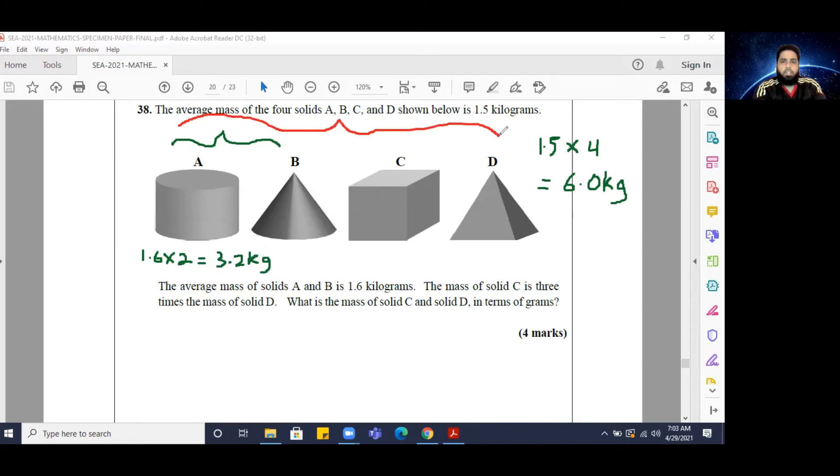So the combined mass of all four solids is 6.0 kilograms, whereas the combined mass of solids A and B is 3.2 kilograms, and we want to know what the mass of solid C and solid D is in terms of grams. So what we're going to do now is figure out what solid C and D weigh together, and that's easy. All we have to do is take 6.0 and subtract 3.2 from it, and that is going to leave us with 2.8 kilograms.